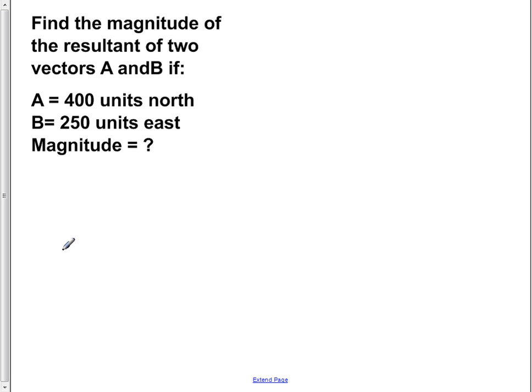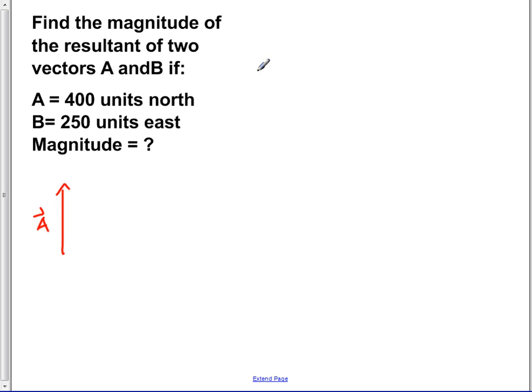So first we're going to draw vector A here in red, this is vector A, and then in green we'll draw vector B.